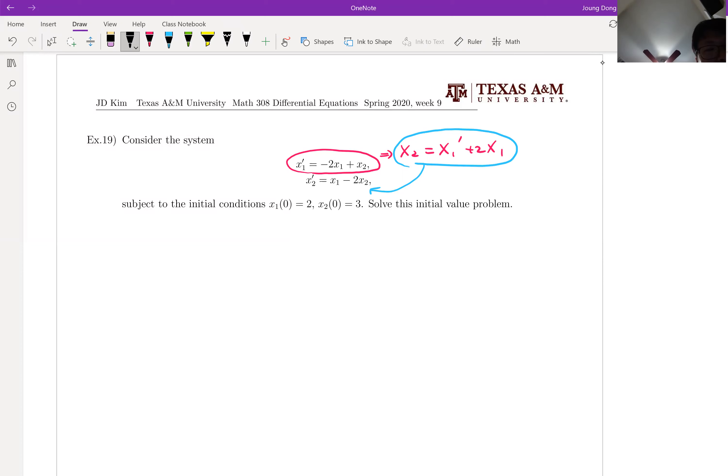Then the second equation will be written like this way. x1 prime plus 2x1 prime plus x1 and minus 2 and x1 prime plus 2x1. Clean up.